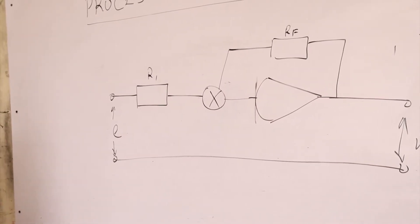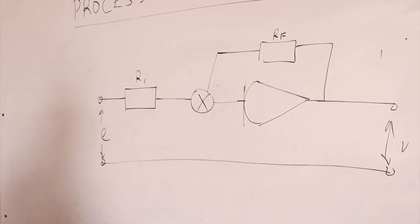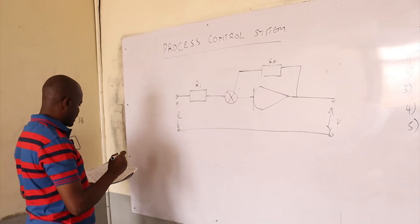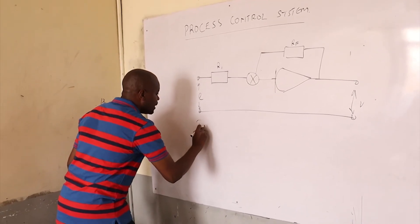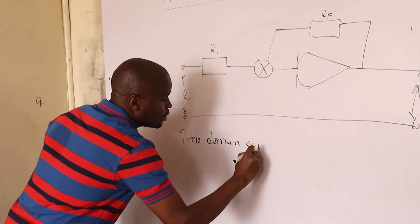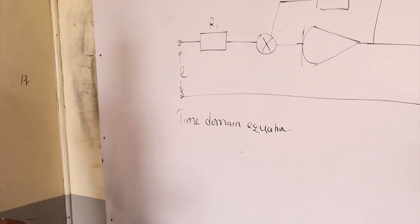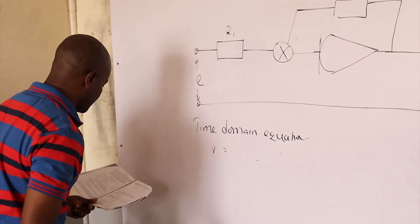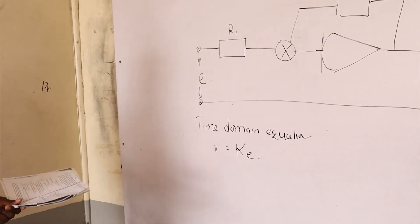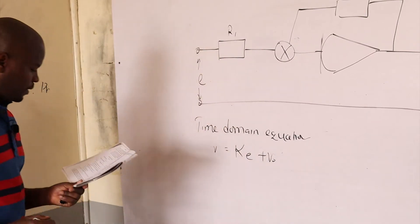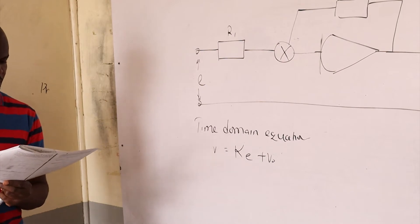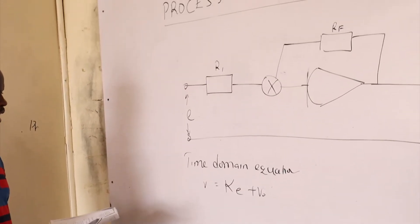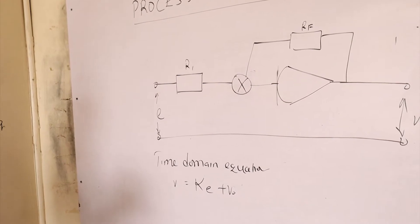Let's look at the equations that guide the proportional control. Starting with the time domain equation — this describes the relationship between input and output. We can say that small v equals kE plus V0, where k is the proportionality constant. V0 is the time domain output when the error equals zero — that is the initial value when E equals zero.